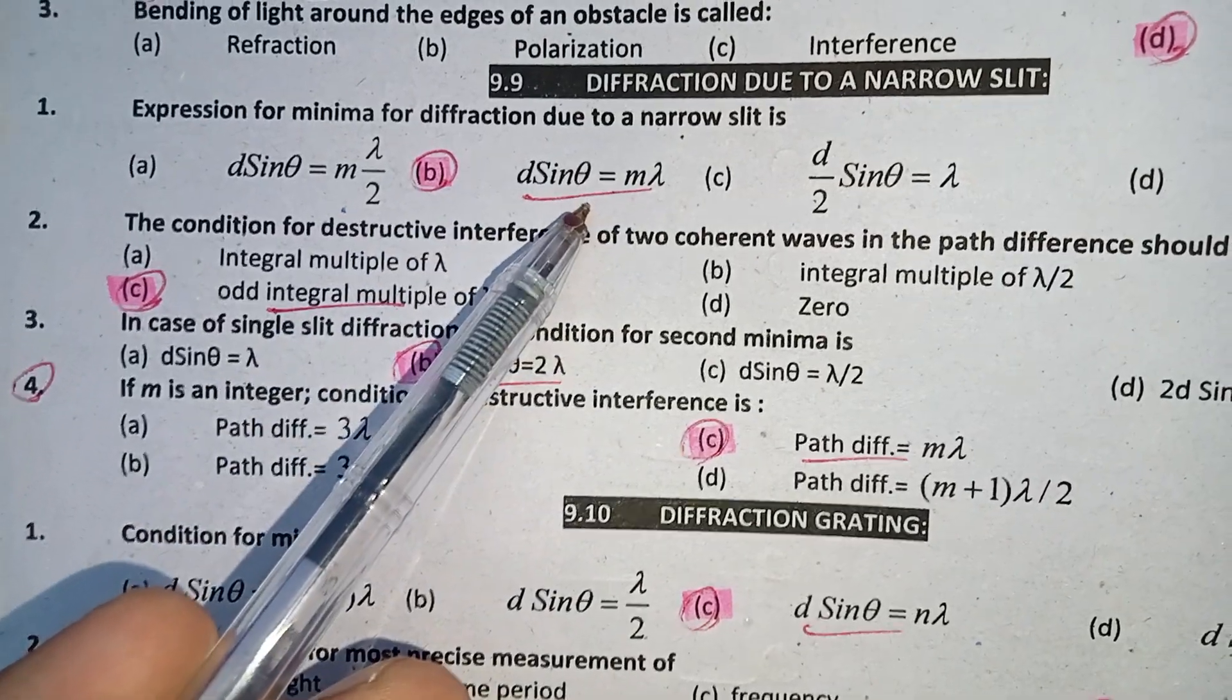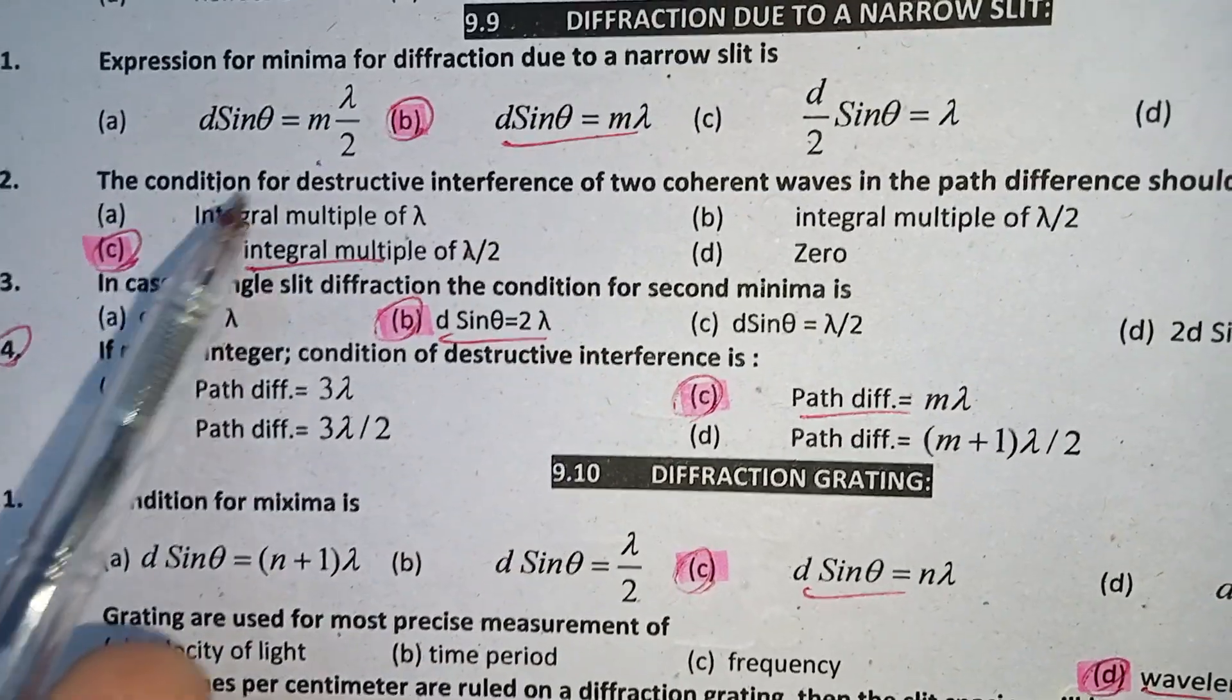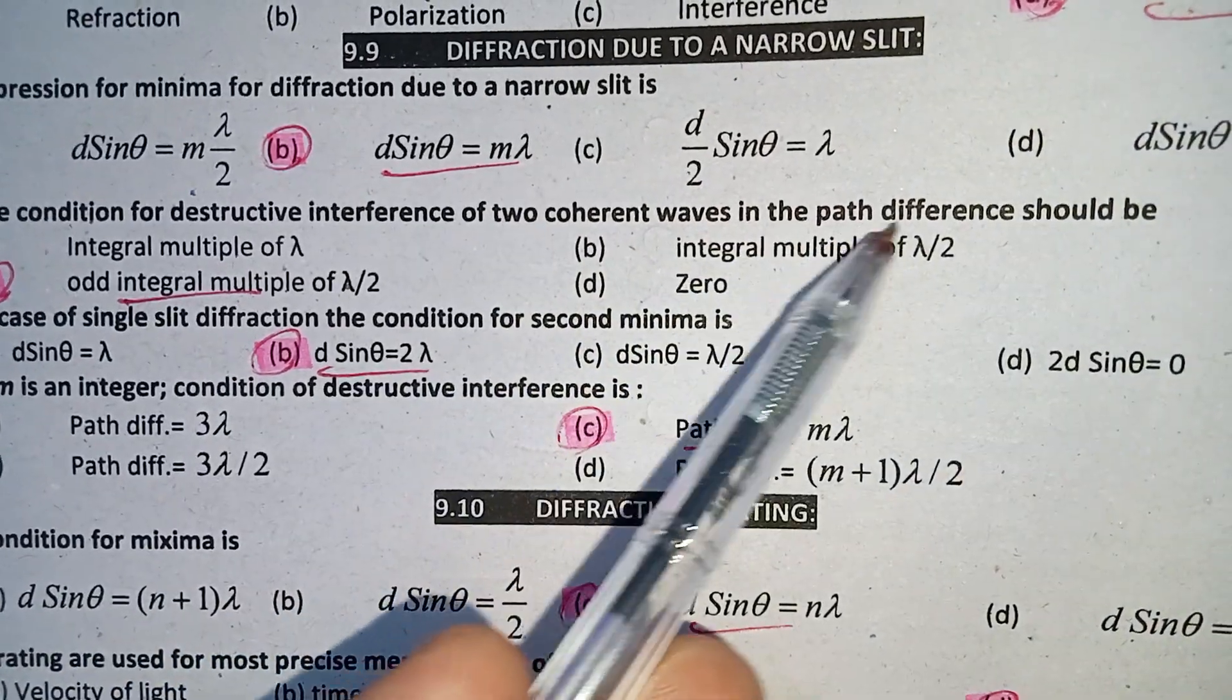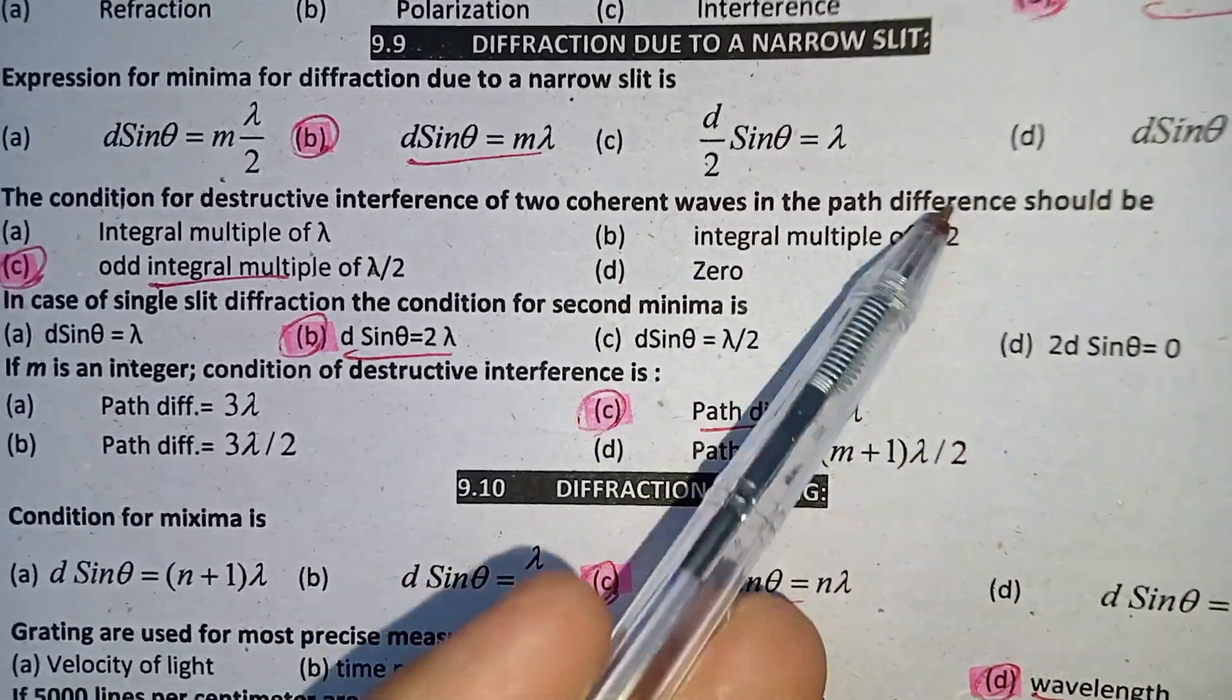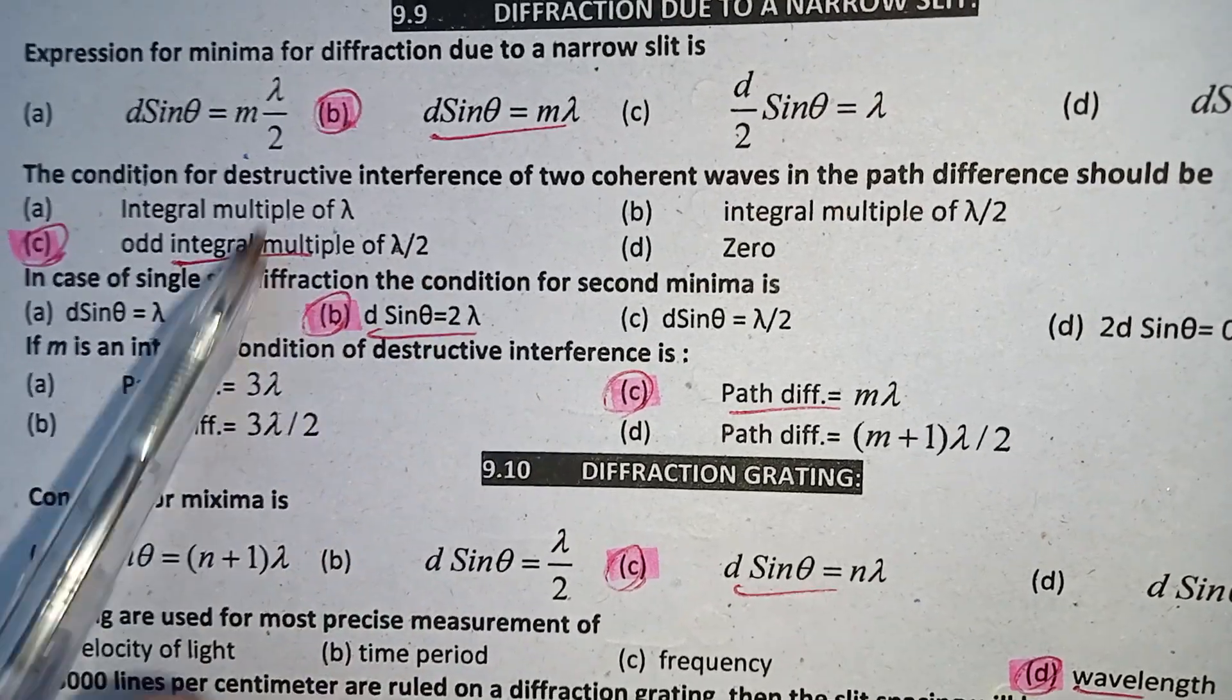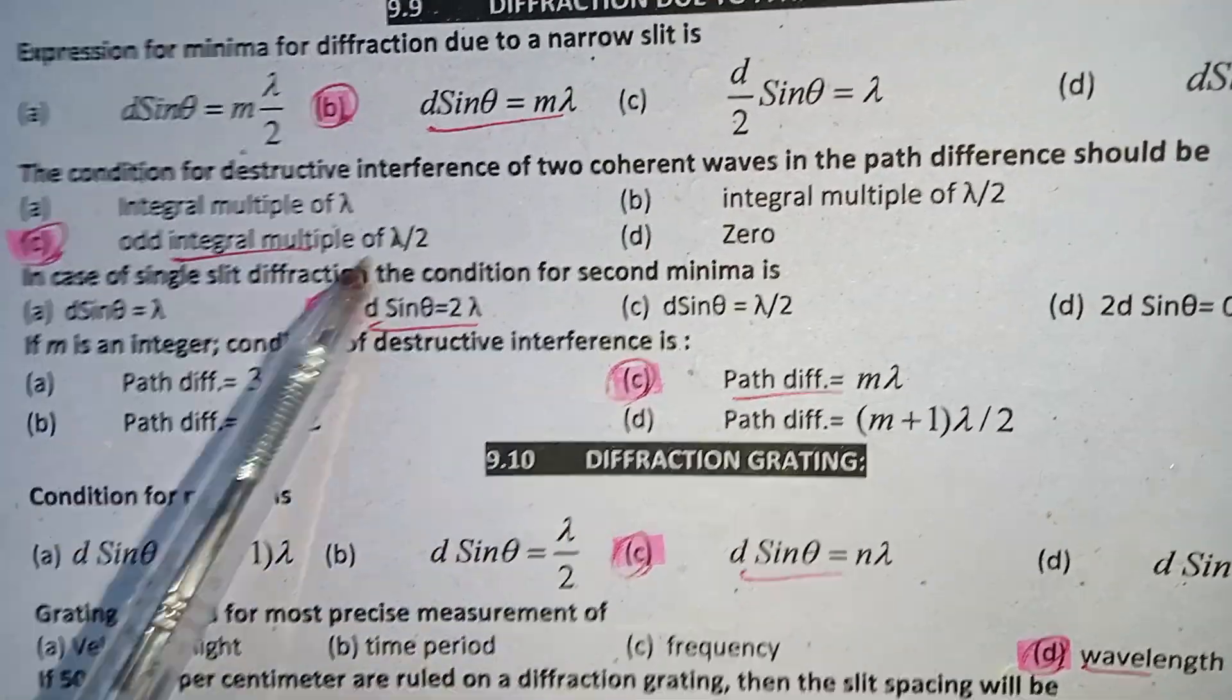B is the right answer. Question two: The condition for destructive interference for two coherent waves, the path difference should be odd integral multiple of lambda by two for destructive interference.